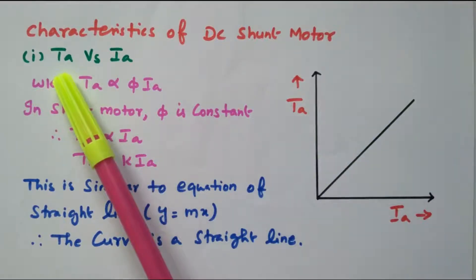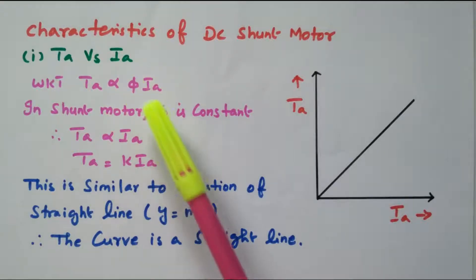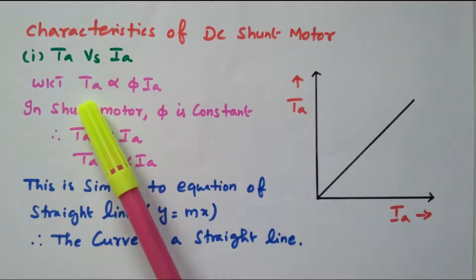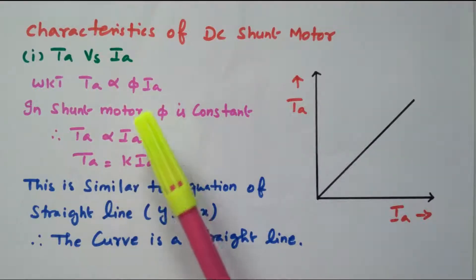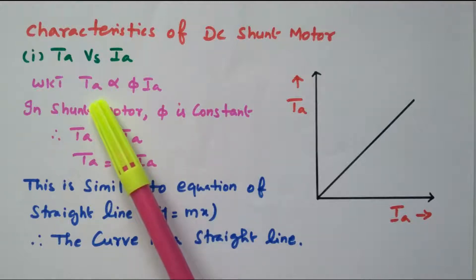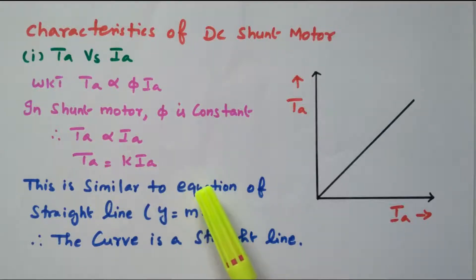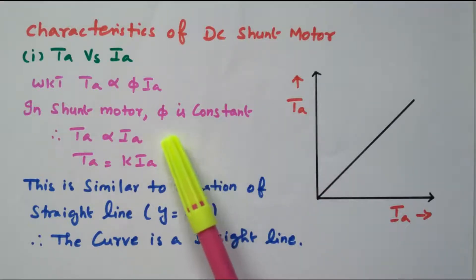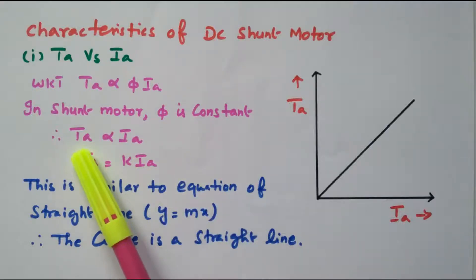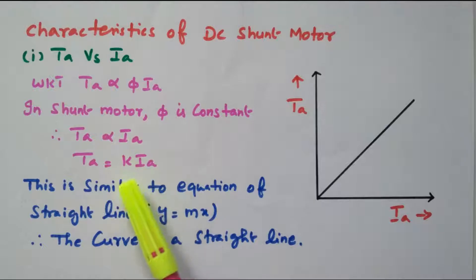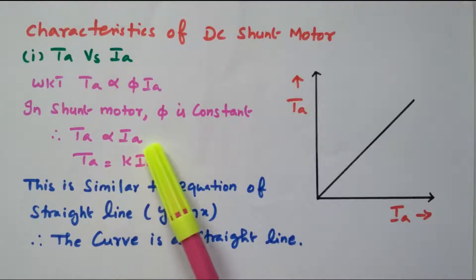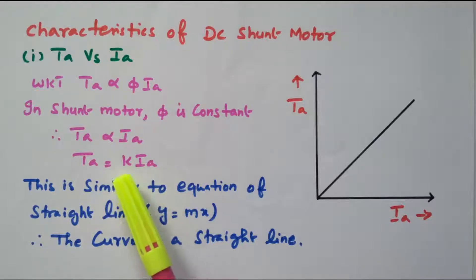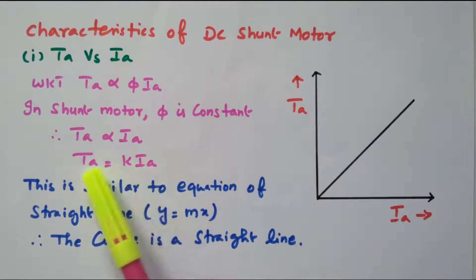The first characteristic is armature torque versus armature current, T_A versus I_A. We know that the relation between T_A and I_A is: T_A is directly proportional to flux (φ) into I_A. Armature torque depends upon the flux and armature current. But in the case of a shunt motor, the flux is almost constant. So the armature torque is directly proportional to only armature current: T_A ∝ I_A, which can be written as T_A = K × I_A, where K is a constant.